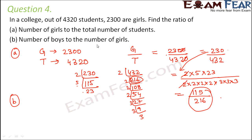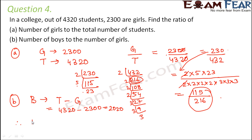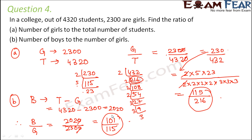Now let's look at the second part — the ratio of number of boys to the number of girls. The number of boys is total students minus girls: 4,320 − 2,300 = 2,020. So the ratio of boys to girls is 2,020 divided by 2,300. Cancelling the common zeros and applying prime factorization, the answer is 101 : 115.